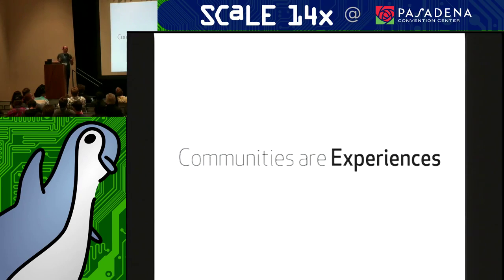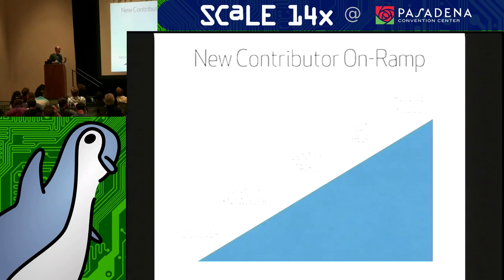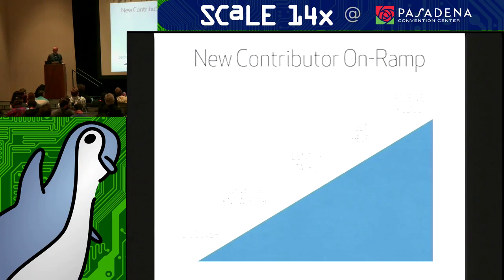I look at community management through the perspective of how we build really effective experiences for different types of people. Today, for the practical stuff, I want to talk about the experience of a new contributor. This is why I think a lot of open source projects don't get it quite right — they don't think about what that experience is, and consequently they miss opportunities to make joining an elegant experience. I think of it in terms of the new contributor on-ramp, and there are basically five areas.